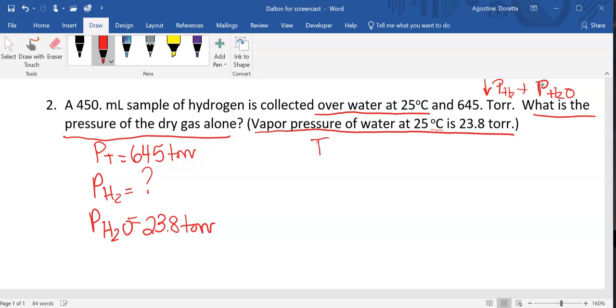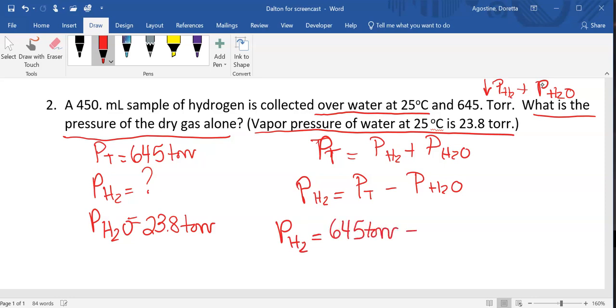So P total is equal to pressure of hydrogen plus the pressure of water. So in order to get our hydrogen alone, the pressure for hydrogen is going to be equal to the total minus the partial pressure of water. So our pressure for hydrogen is going to be 645 torr minus 23.8 torr.